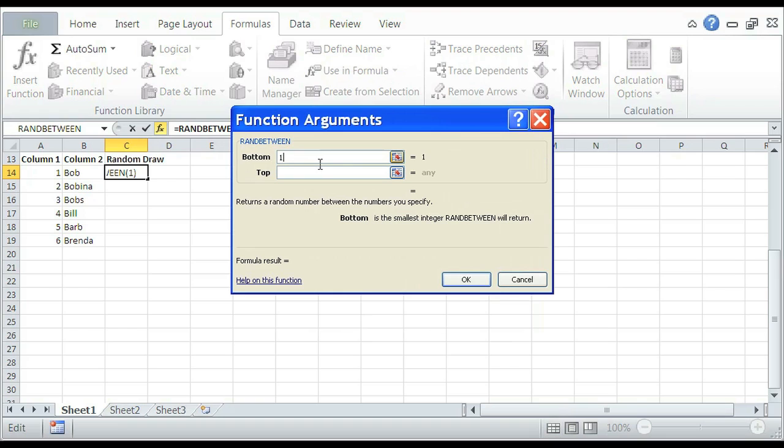Now the bottom is going to be 1 and the top is going to be 100. Click OK. And it randomly drew 60.